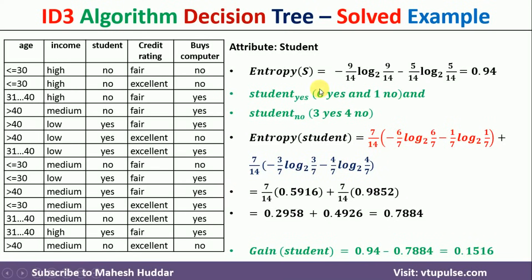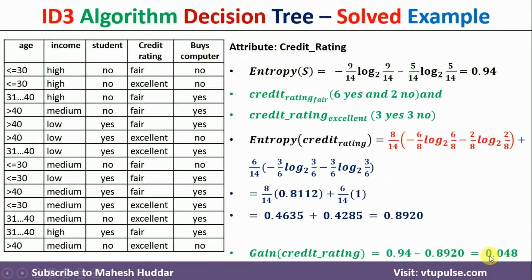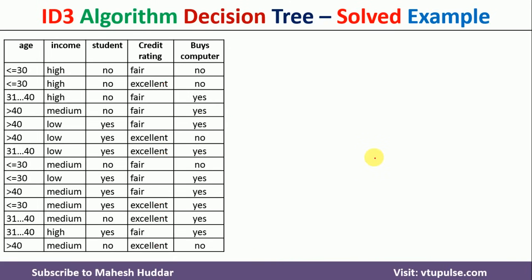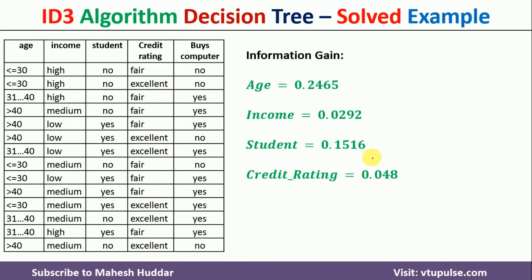Similarly, we calculate the information gain for student and credit rating. The information gain for student is 0.1516 and for credit rating is 0.048. Now comparing all four attributes: age has 0.2465, income has 0.0292, student has 0.1516, and credit rating has 0.048. Age has the highest information gain, so we select age as the root node and begin building the tree.